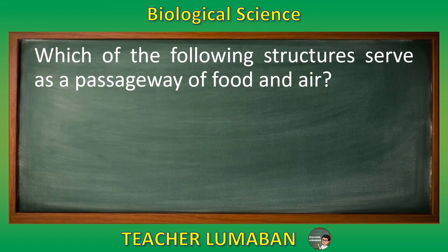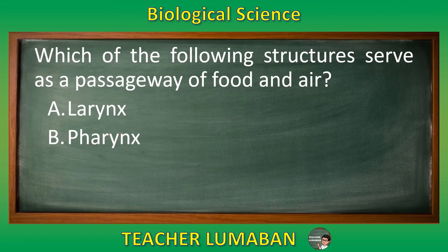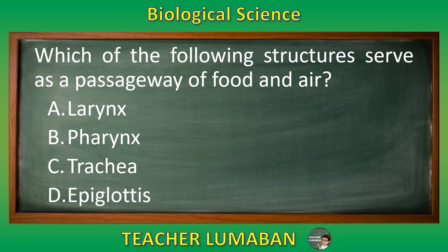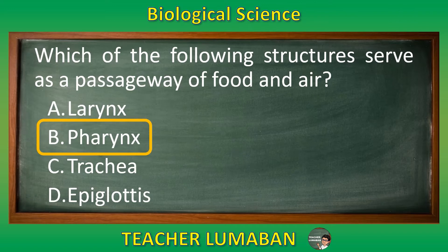Which of the following structures serves as a passageway of food and air? Letter A: larynx. Letter B: pharynx. Letter C: trachea. Letter D: epiglottis. The correct answer is letter B, pharynx. The pharynx structure serves as a passageway of food and air.